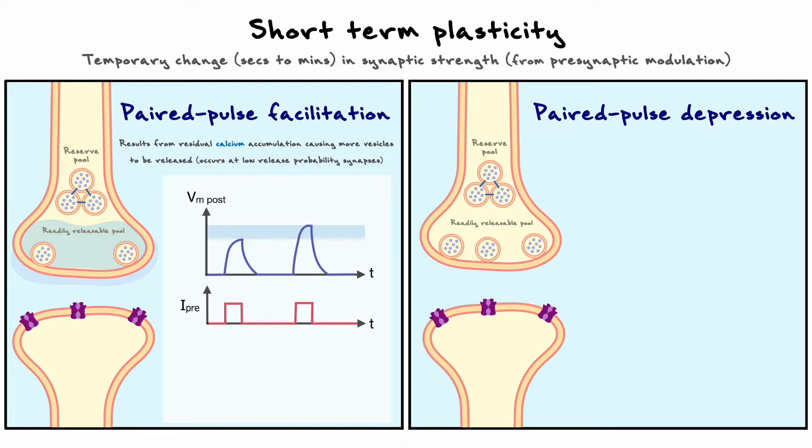The other fraction of the calcium remains in the terminal and when the second pulse arrives shortly after, it adds on calcium that causes even more neurotransmitters to be released. Hence, the second pulse becomes bigger because more receptors get activated. In this scenario, the fact that the synapse has a low release probability is important because it ensures that the presynaptic terminal has the necessary amount of vesicles ready at the edge of the membrane to be released on the second pulse.